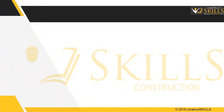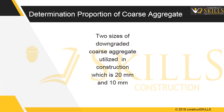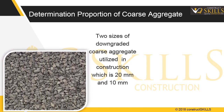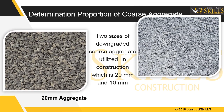Based upon gradation done, the proportion of aggregates is determined. Generally, two sizes of downgraded coarse aggregates are utilized in construction: 20 mm and 10 mm.